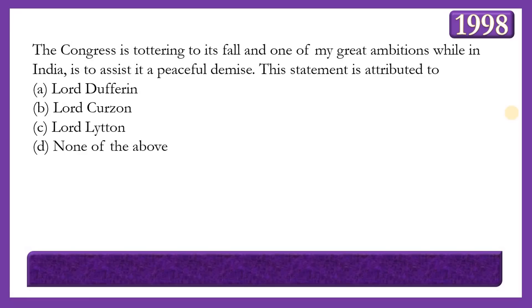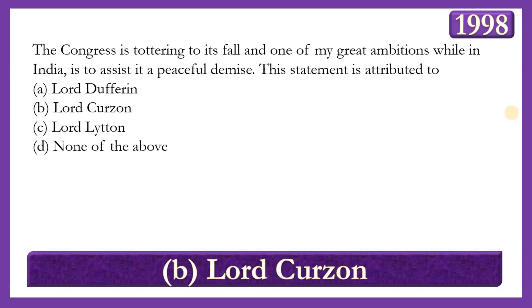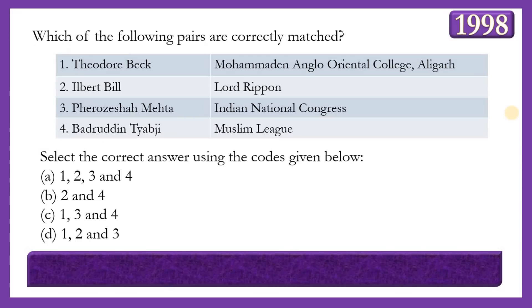Next question: 'The Congress is tottering to its fall and one of my greatest ambitions while in India is to assist it in a peaceful demise.' This statement is attributed to whom? Options: Lord Dufferin, Lord Curzon, Lord Lytton, or none of the above. The answer is option B — Lord Curzon — who did quote this statement.